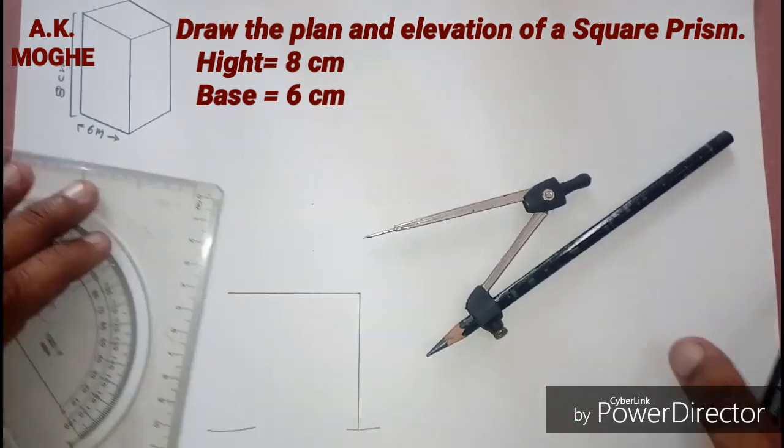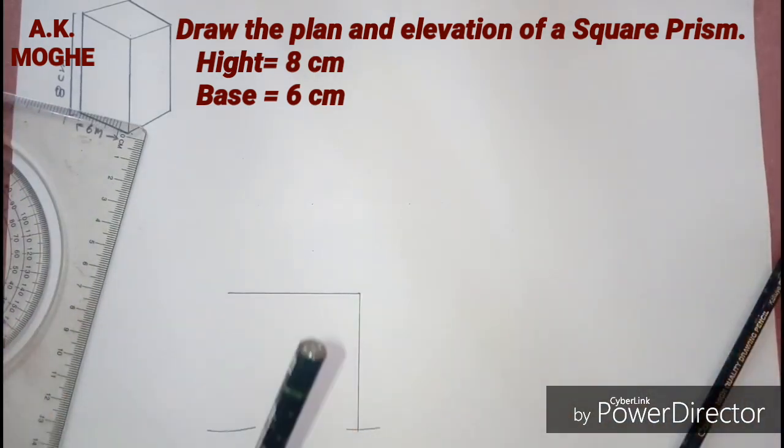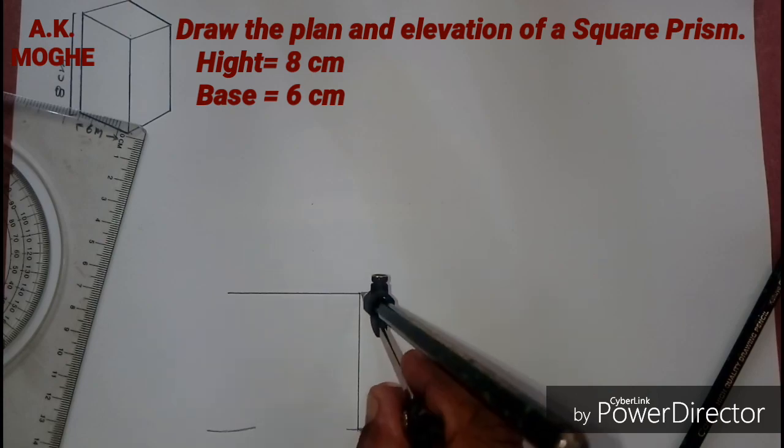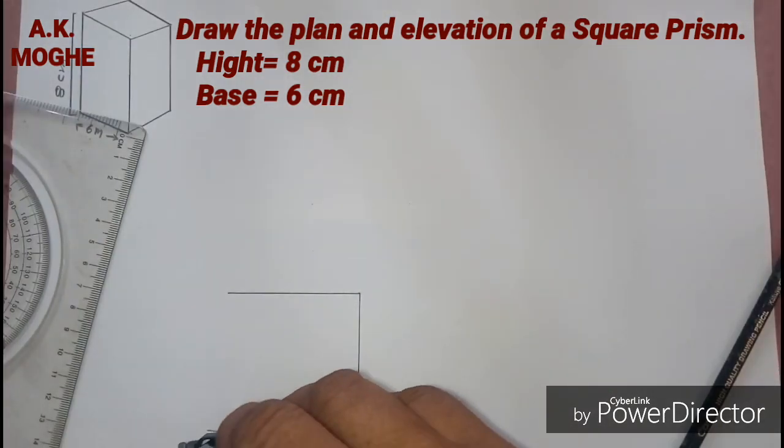To draw the top view, mark the length equal to one of the sides of the prism. That is in this case it is 6 cm.